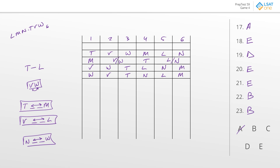Just to confirm: answer C — N immediately next to T — yes, we've seen T and N adjacent, so that's possible. Answer D — T immediately next to V — also possible from previous scenarios. Answer E — T immediately next to W — we've also seen that scenario. All other choices are possible, confirming that B is the only one that must be false. Best answer for question 23 is B.